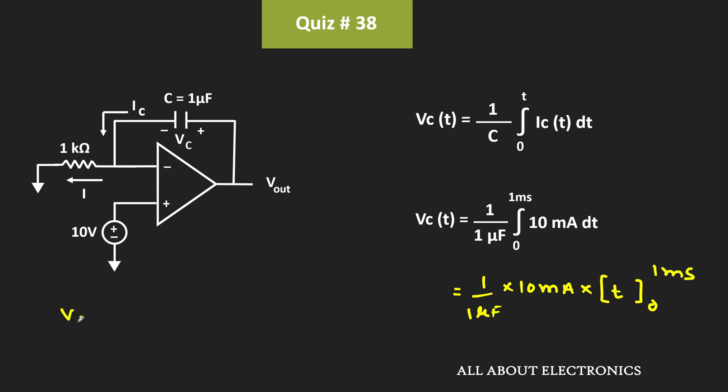Or we can say that Vc equals 10mA divided by 1μF times 1ms, which equals 10V.